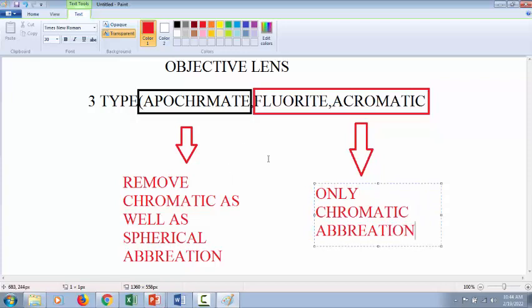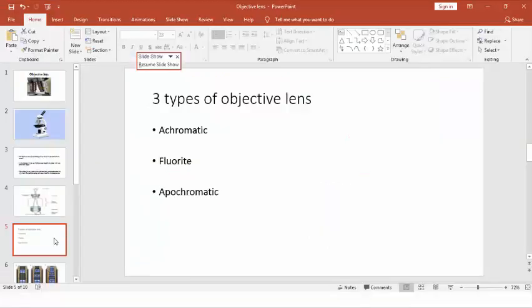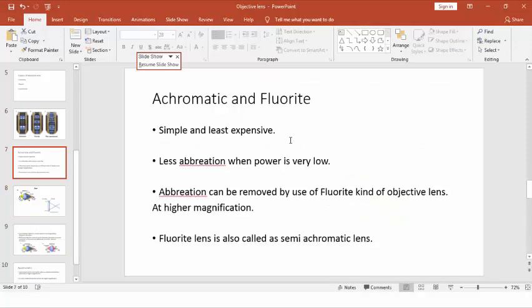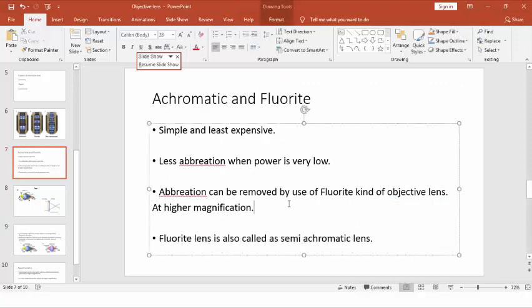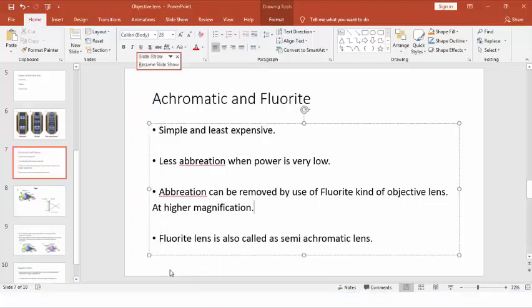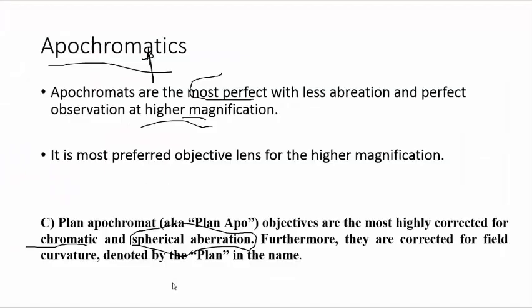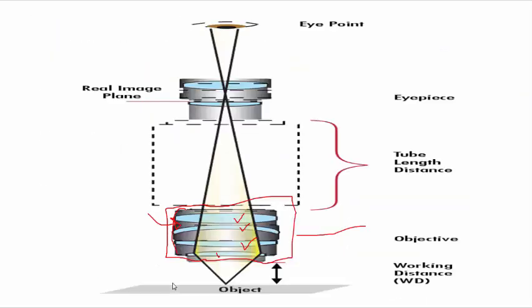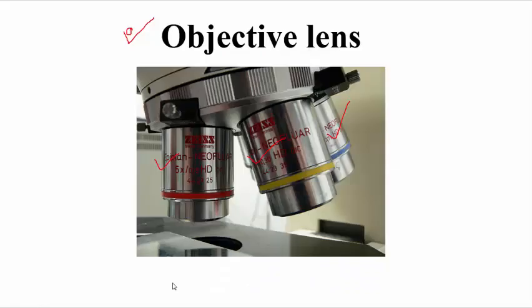One more thing to remember: these are the characteristics of achromatic and fluorite lenses, and the fluorite lens is also called a semi-achromatic lens. They work in the lower magnification range and are the cheapest. This is about the objective lens, which is a very important part of the microscope, and they are used for magnification as well as for removing aberration. If you have any doubt, you can ask a question. Thank you.